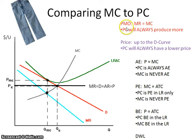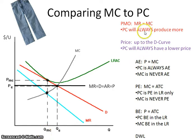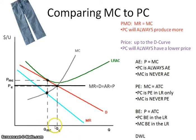Everybody always produces at that profit-maximizing output, which is where MR equals MC. One of the things to recognize here is that the quantity of the monopolistically competitive will always be less than the perfectly competitive. The perfectly competitive rocks when it comes to quantity in any industry because they're the firm that is going to be able to produce the most.